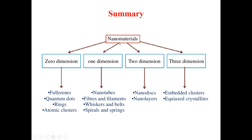In summary, nanomaterials are classified as zero-dimensional, one-dimensional, two-dimensional, and three-dimensional. Zero-dimensional examples include quantum dots, rings, and atomic clusters. One-dimensional examples include nanotubes, fibers, filaments, and helical springs. Two-dimensional examples include nanodisks, nanowires, and graphene. Three-dimensional examples include embedded clusters and equiaxed nanocrystalline materials.